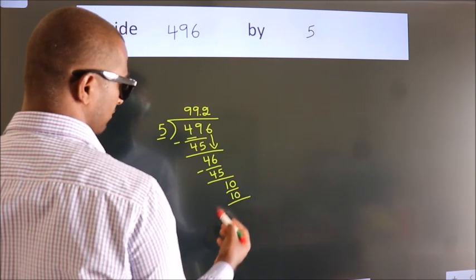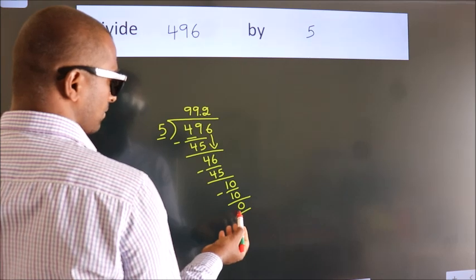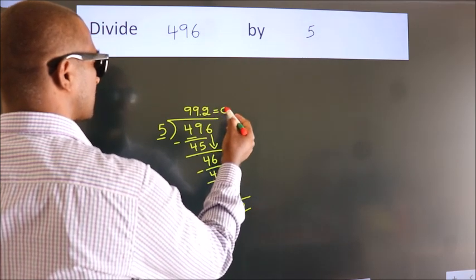Now we subtract. We get 0. We got remainder 0. So this is our quotient.